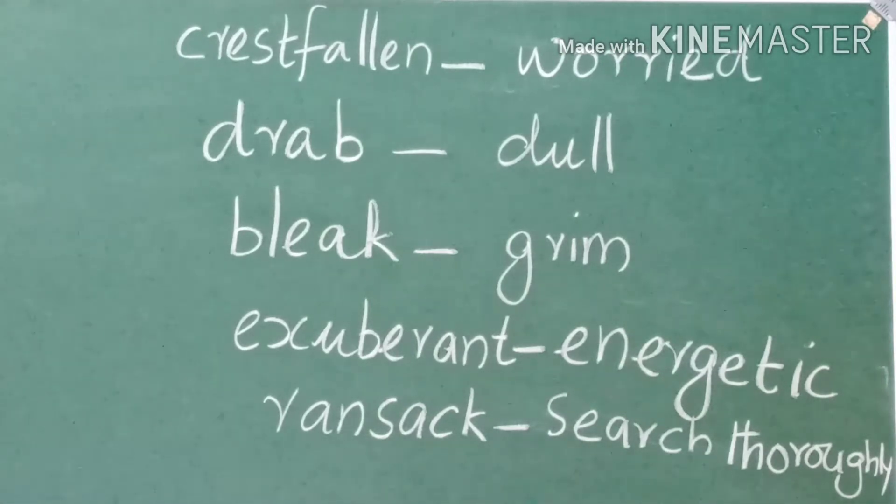Next word for you: exuberant. Exuberant means energetic and active person. When you act something, when you do something, if you are exuberant means you are highly interested in the activity, you are highly energetic in the activity or in the matter. Such a type of people are called exuberant.